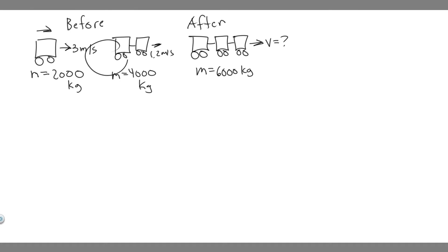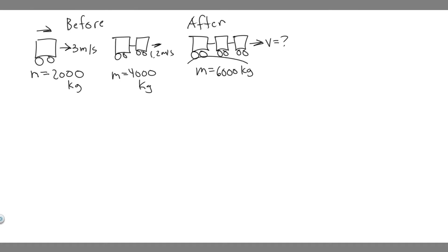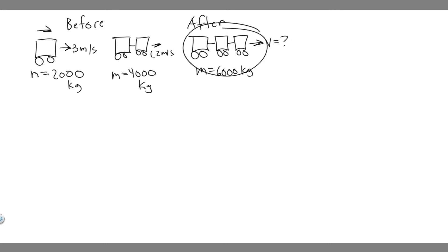So they're going to collide and then after, they're going to be coupled — all together. Their combined mass is going to be 6,000 kilograms, because there are three of them at 2,000 each. What we're trying to find is the velocity of these three cars after they collide. That's what we want to do for Part A.